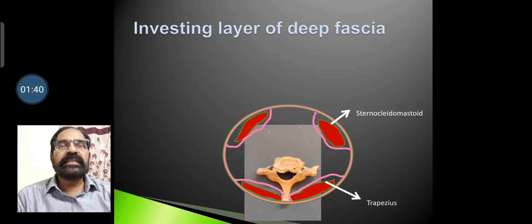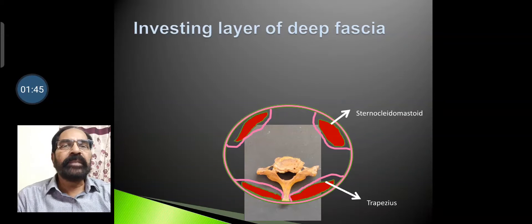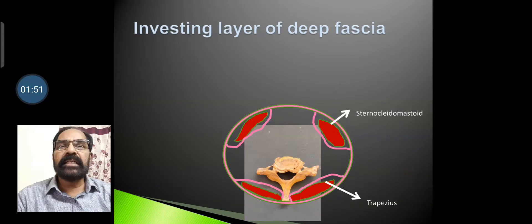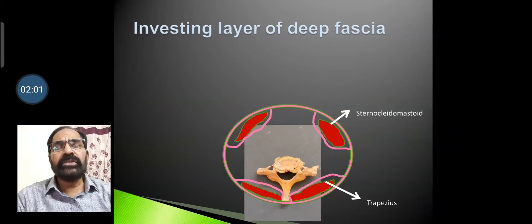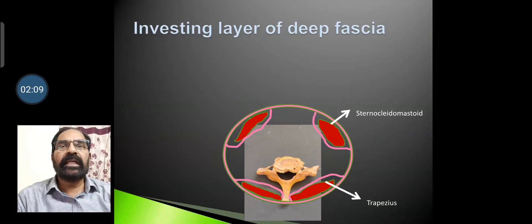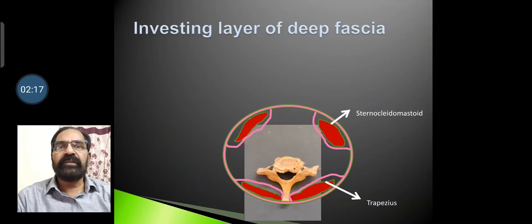In the picture, you can see the investing layer of deep cervical fascia. It begins at the spinous process of the cervical vertebra, then extends to both sides. It splits to enclose the trapezius muscle, then becomes one again and continues, then splits again to enclose the sternocleidomastoid muscle, and continues to the midline of the neck, joining with the other side. This is the investing layer of deep cervical fascia.